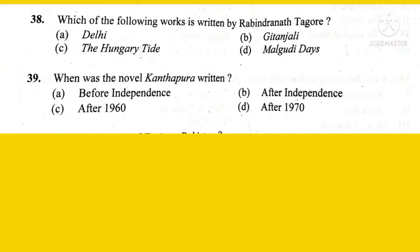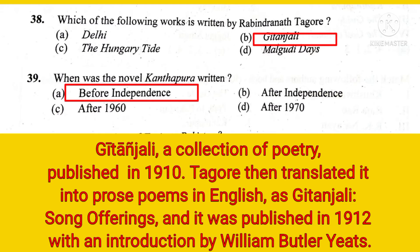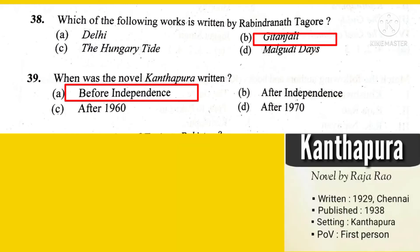Which of the following works is written by Rabindranath Tagore? The right option is Gitanjali. When was the novel Kanthapura written? The right option is Before Independence. Gitanjali is a collection of poetry published in 1910. Tagore then translated it into English as Gitanjali: Song Offerings, published in 1912 with an introduction by William Butler Yeats. Kanthapura was written in 1929 and published in 1938, so it was written before independence.